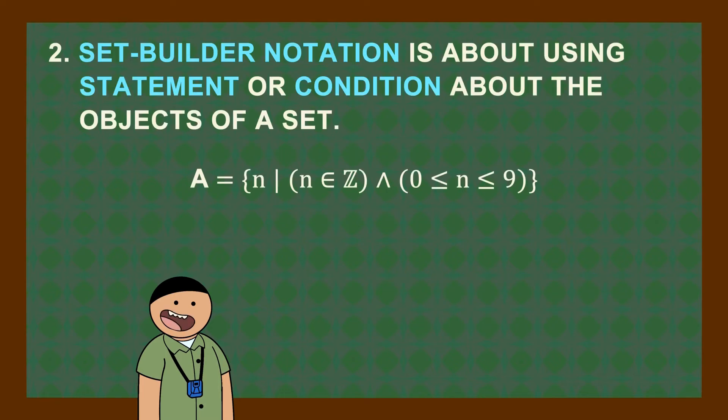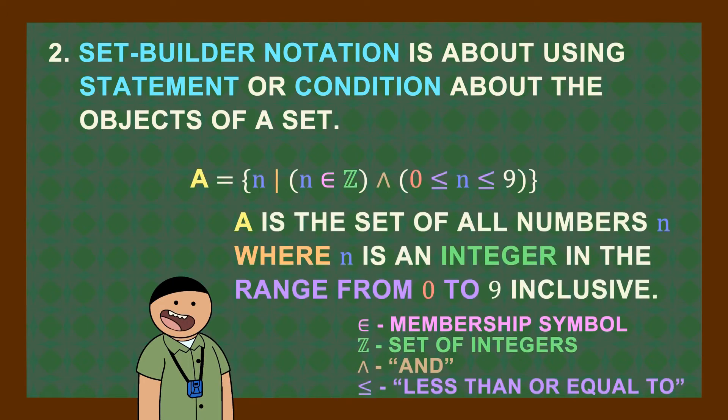Set builder notation is about using statement or condition about the objects of a set like this. A vertical bar here means where or such that. The thing stated here means A is the set of all numbers n where n is an integer in the range from 0 to 9 inclusive.